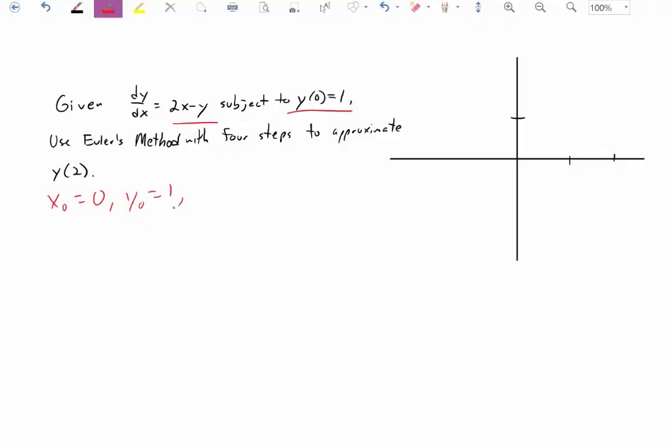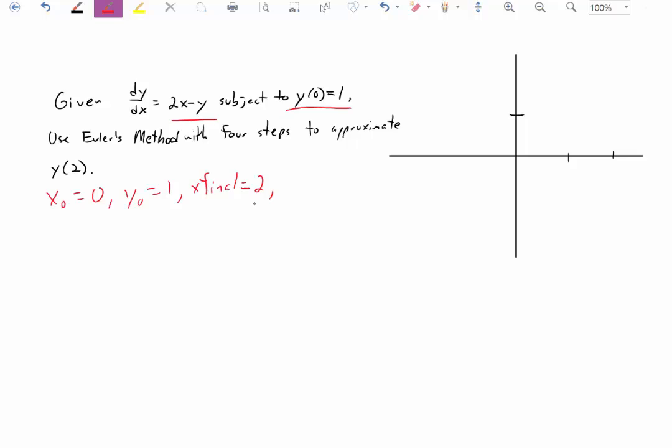I also have some sort of target x value in mind, some sort of x final. So if I'm starting at x equals 0, I'm then trying to approximate my solution at x equals 2. So that's my final x value. I'm also told how many steps I'm going to take, which is 4. And with that information, I'm able to figure out my step size.